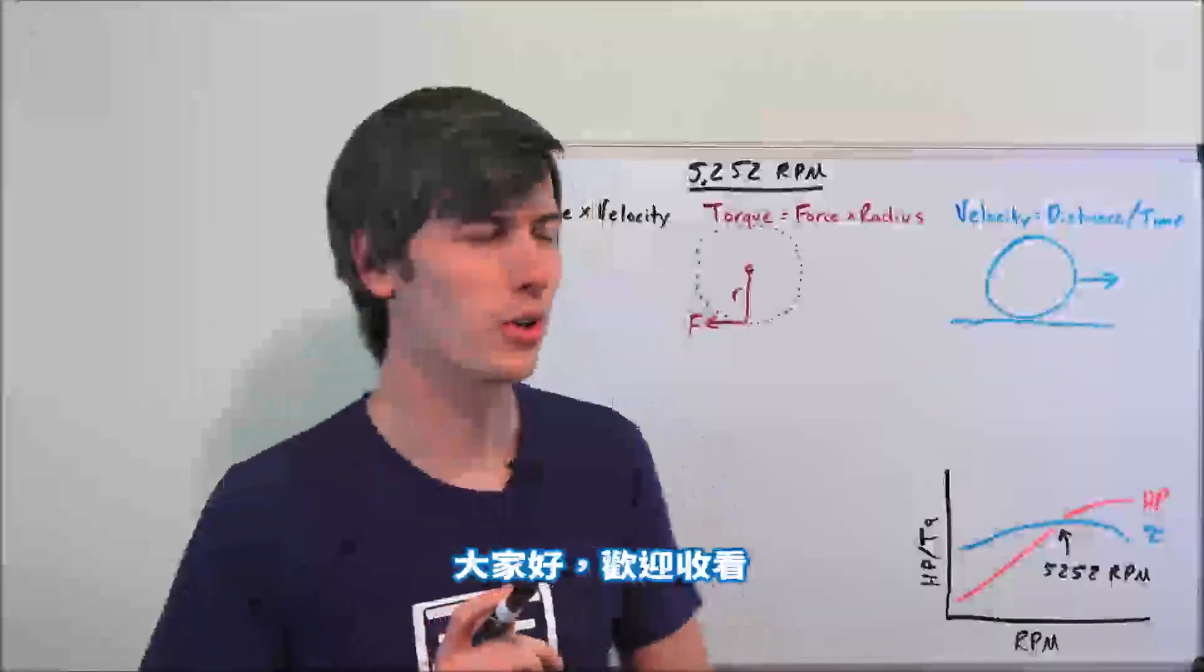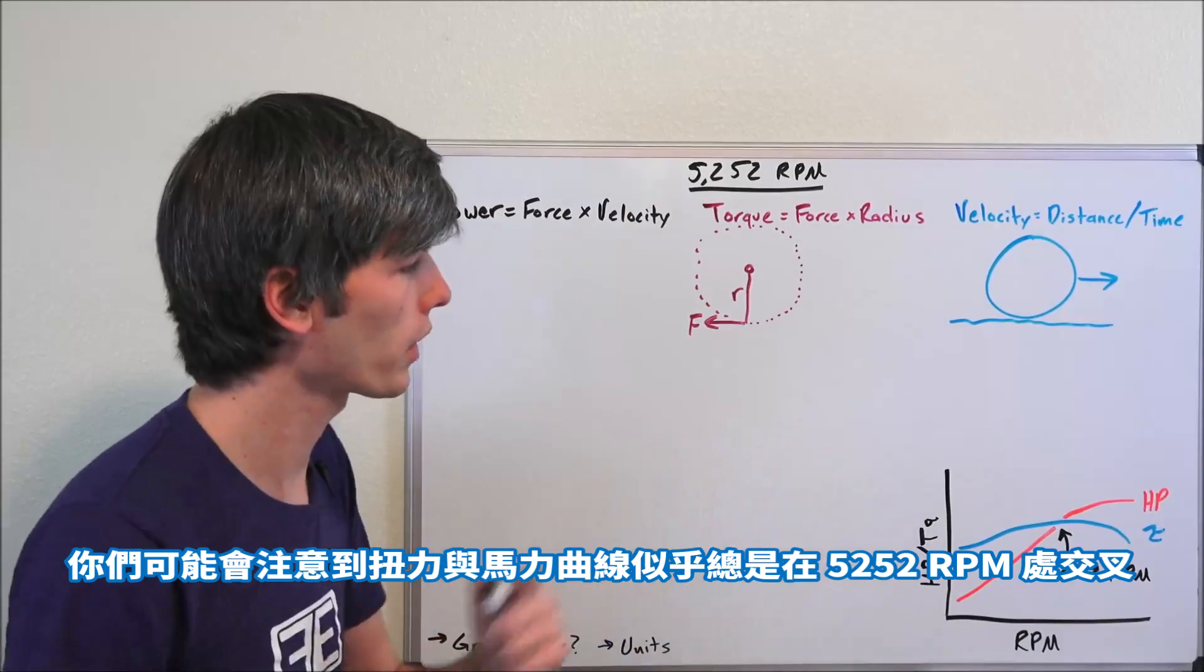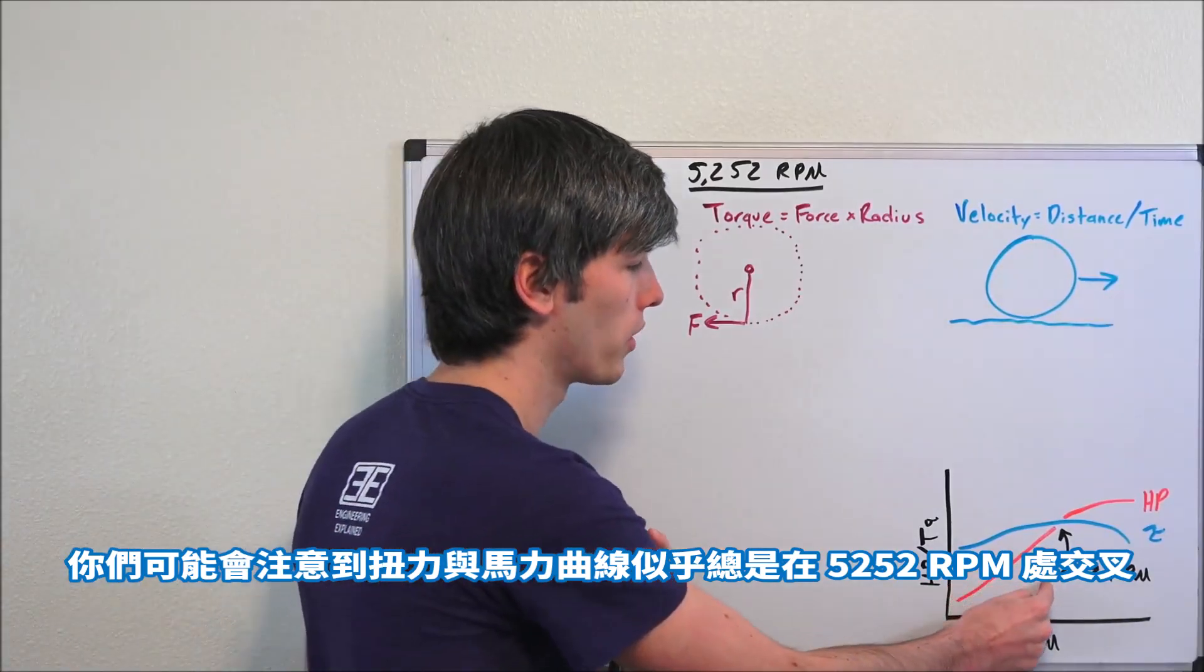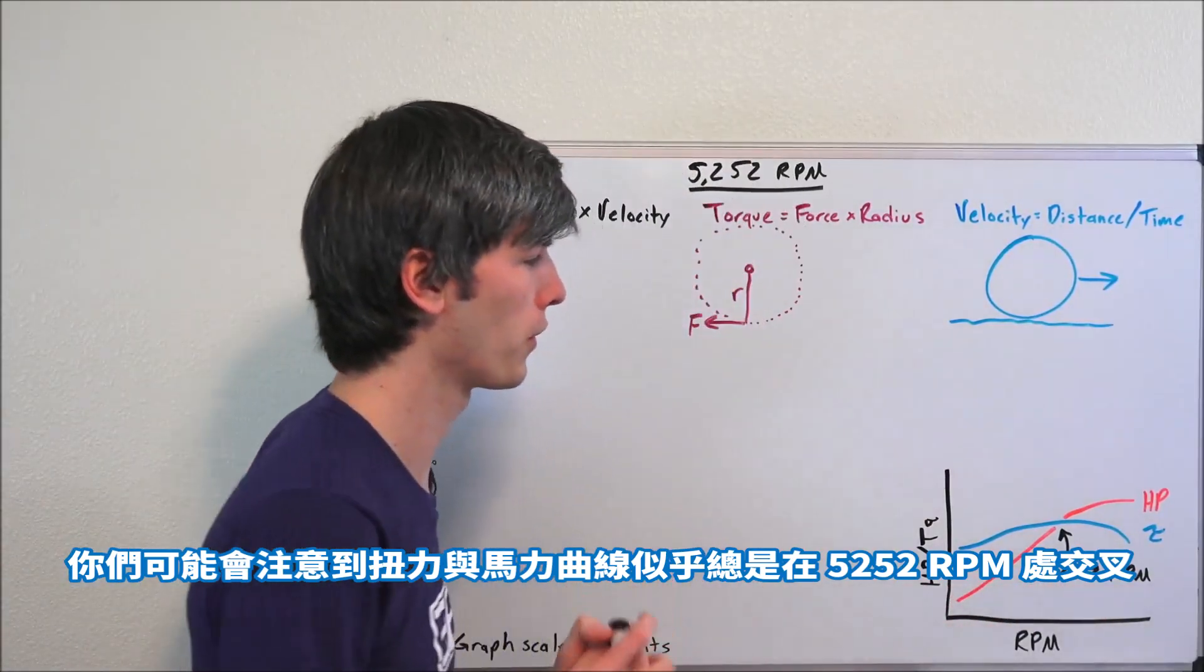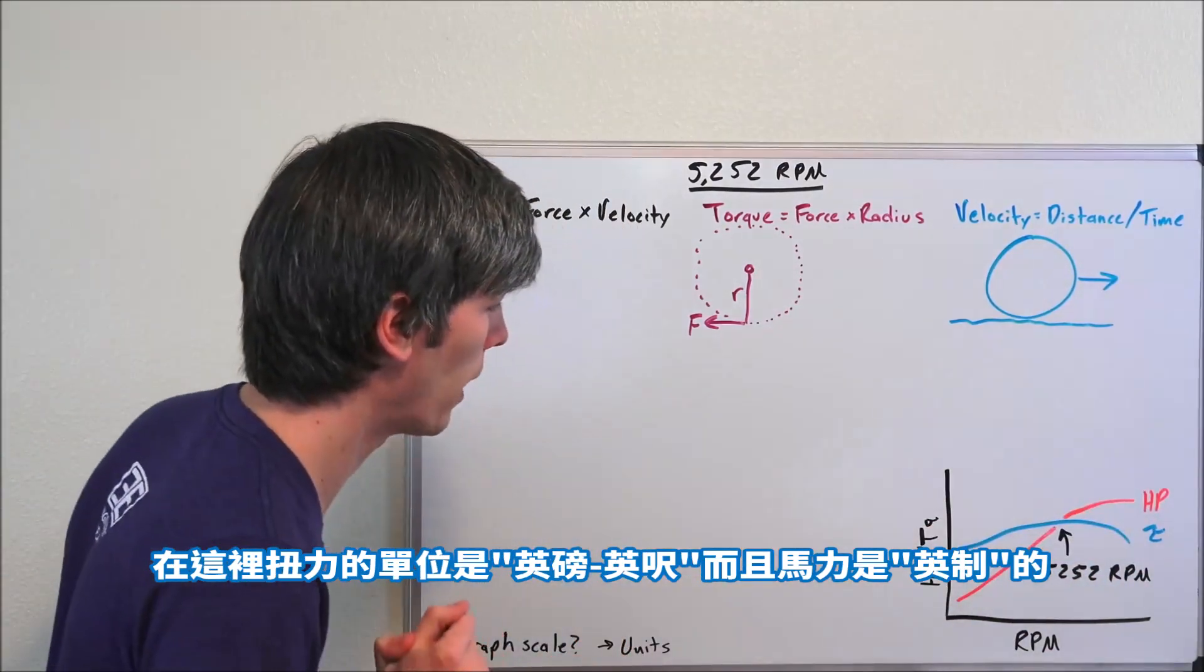Hello everyone and welcome. If you've ever looked at a dyno plot, you may have noticed that torque and horsepower always seem to cross at 5,252 RPM, torque in pound-feet and imperial horsepower.